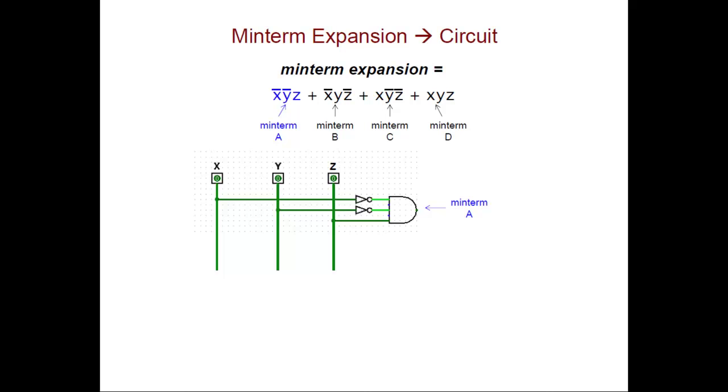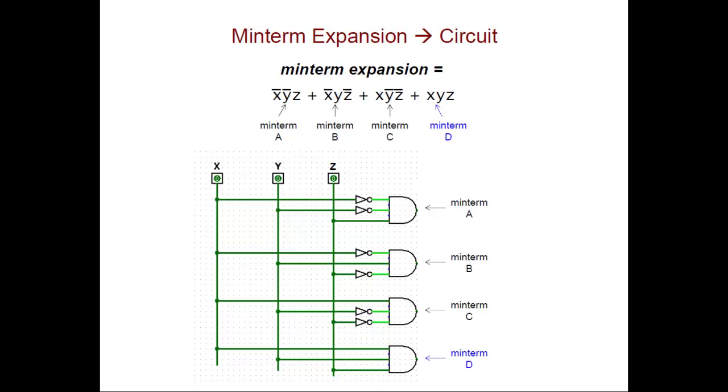Min-term B looks like this. Notice we're passing the inputs for x and z through NOT gates because they are being negated. Then everything is being fed into an AND gate for that min-term. We do the same thing for min-term C and for min-term D. That gives us four AND gates, one for each min-term.